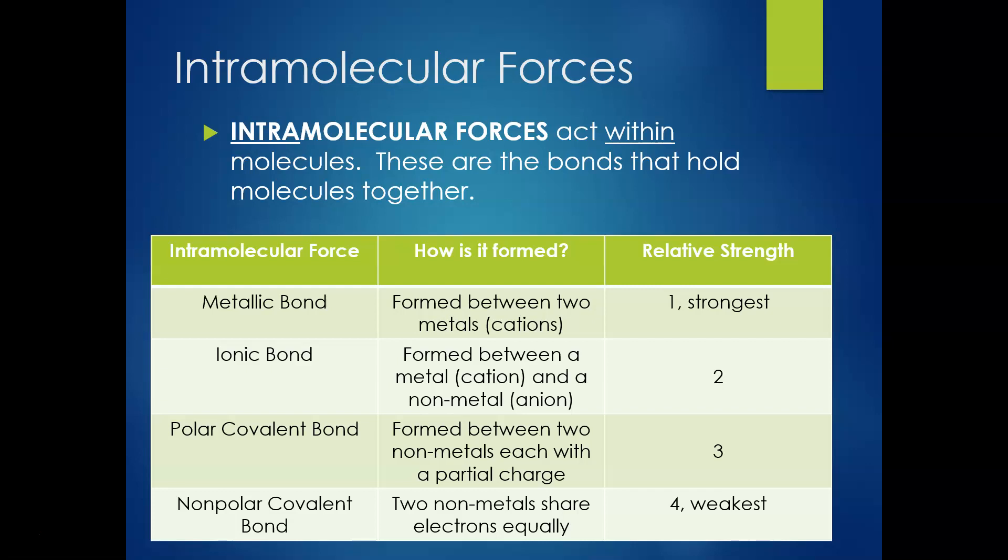Ionic bonds, which as you remember, are formed between a metal and a nonmetal, cation and anion. These are second only to metallic bonds in strength. Meanwhile, both polar covalent and nonpolar covalent are between two nonmetals, but in a polar covalent, it has a partial charge because the electrons aren't shared equally, and in a nonpolar covalent, the electrons are shared equally. Nonpolar covalents are our weakest type of intramolecular force.